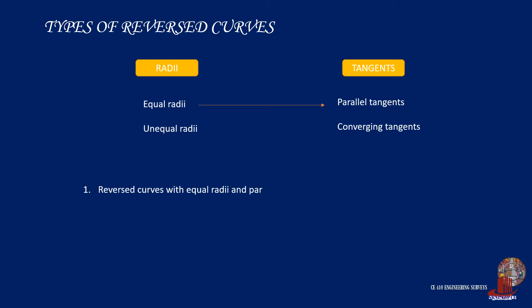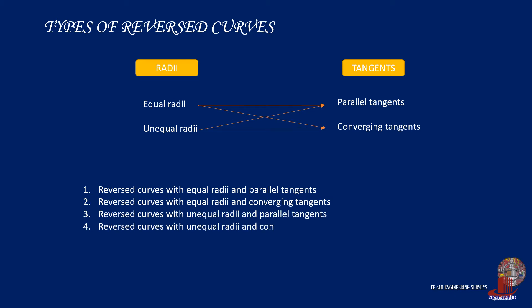There are four types of reverse curves categorized from the radii and tangents. The radii can be classified as equal and unequal, whereas the tangents are grouped under parallel and converging. From these four classes, the types are reverse curves with equal radii and parallel tangents, reverse curves with equal radii and converging tangents, reverse curves with unequal radii and parallel tangents, and reverse curves with unequal radii and converging tangents.